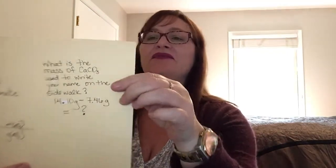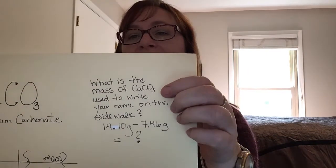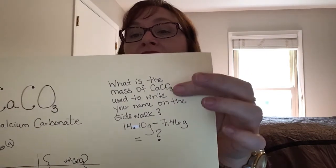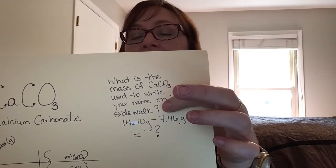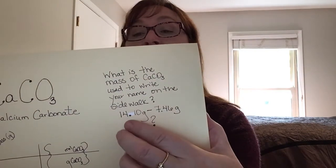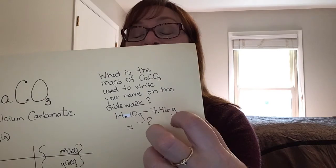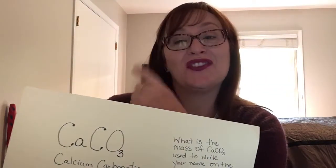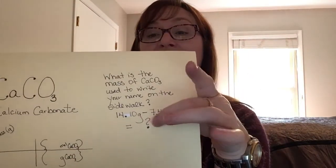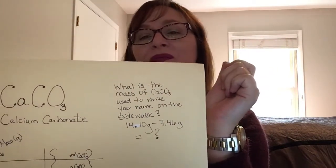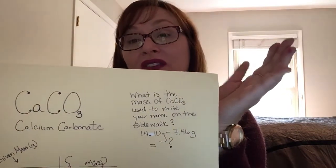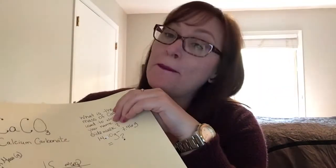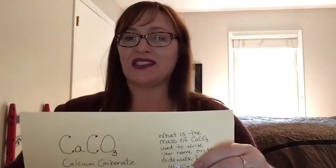Now what we have to do is a little bit of calculation, so get your calculators ready. Have you figured out how many grams of chalk we left on the sidewalk yet? To calculate the mass of calcium carbonate needed to write your name on the sidewalk, we just need to subtract the starting mass from the ending mass of the chalk. The difference tells us the mass of chalk left on the sidewalk. The final step is to convert this mass into moles, and we can use the molar mass to do that.